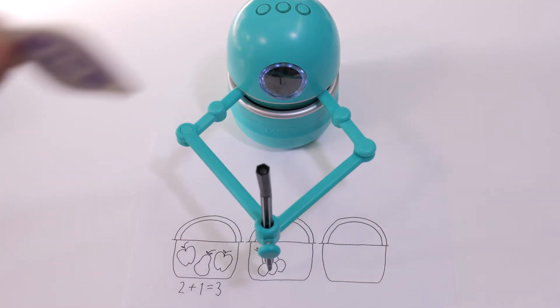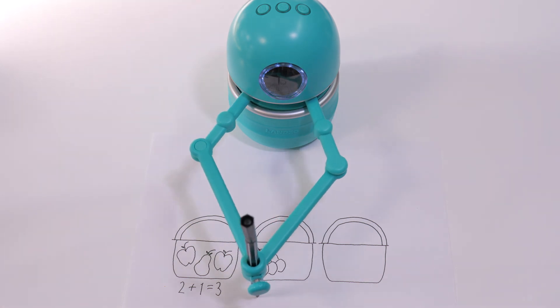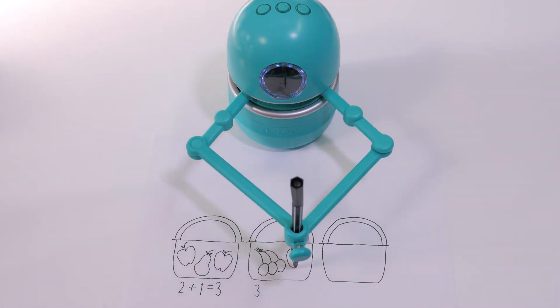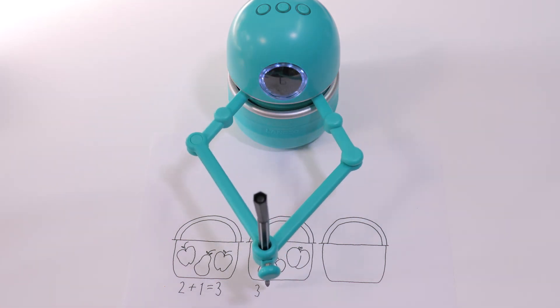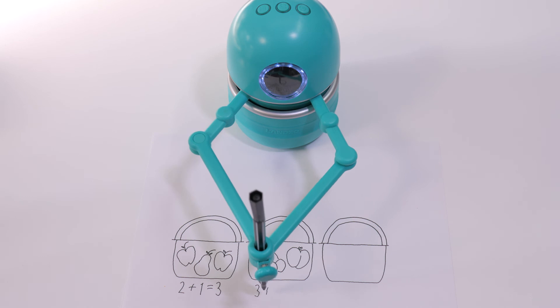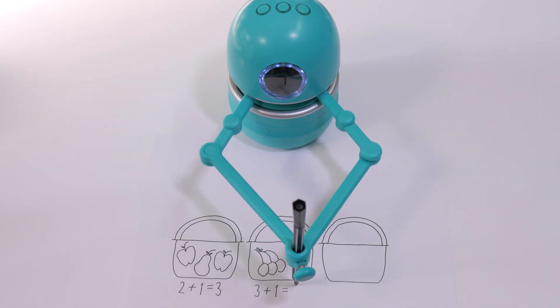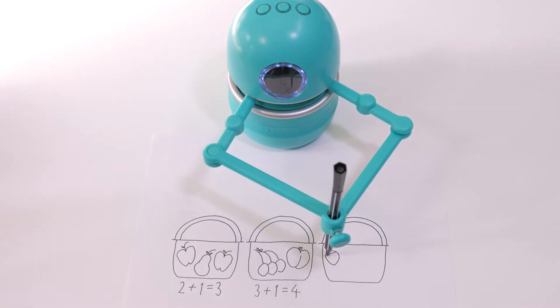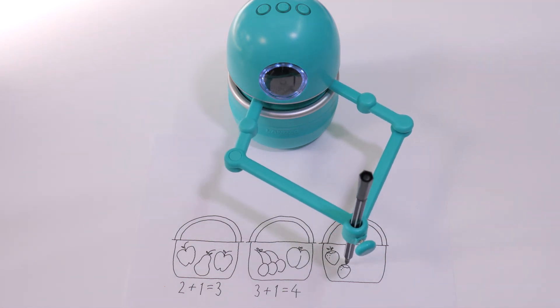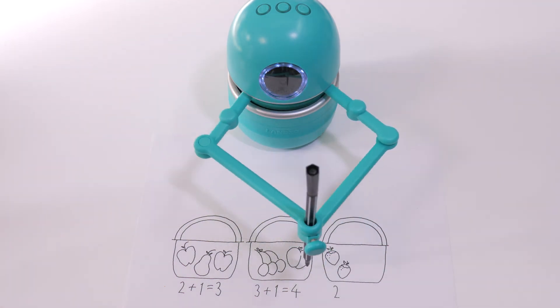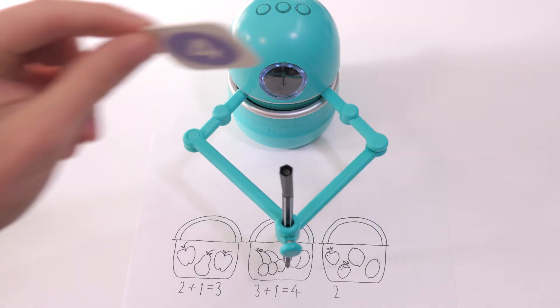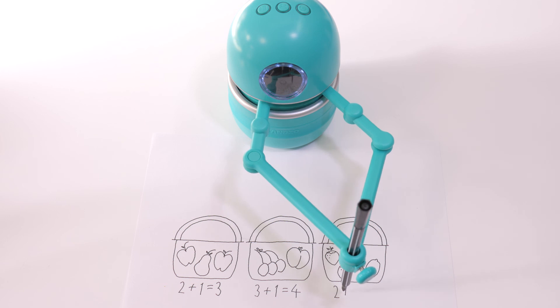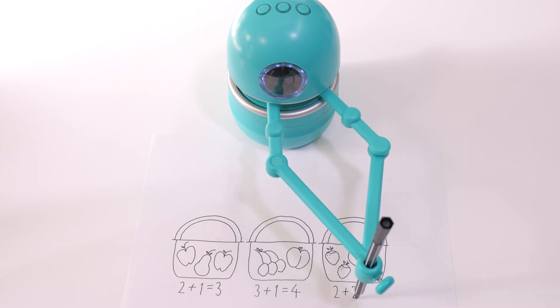That's right! Three cherries plus one peach equals four.